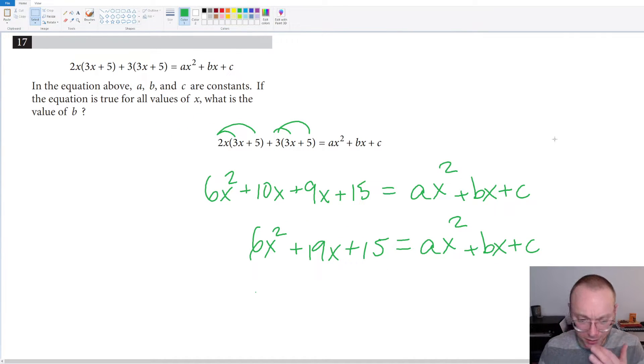We can kind of just start to see that the 6 is the coefficient of x squared, right? The 6 can be compared to the a. And the 19, for example, is in front of the x which can be compared to the b term. And lastly, the 15 is in the position of the c term. So we figured out what a, b, and c would have to be. It says if the equation is true for all values of x, what is the value of b? So we're just going to single out b which is the 19. And so we get our answer 19.